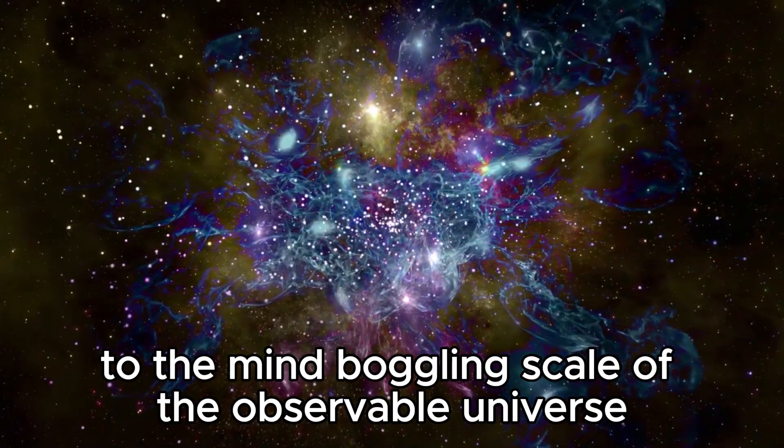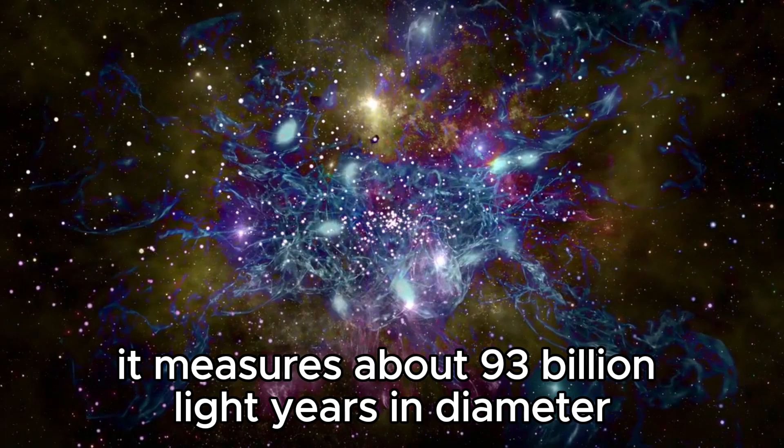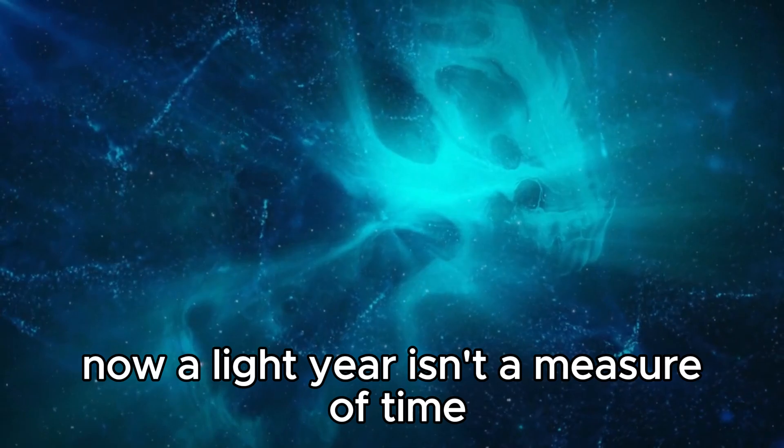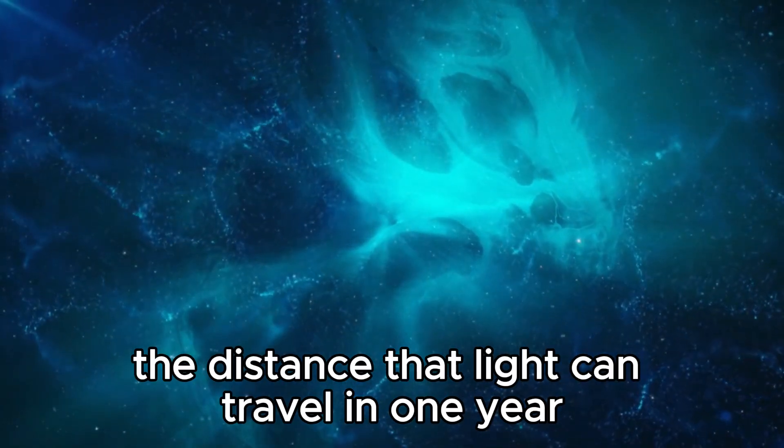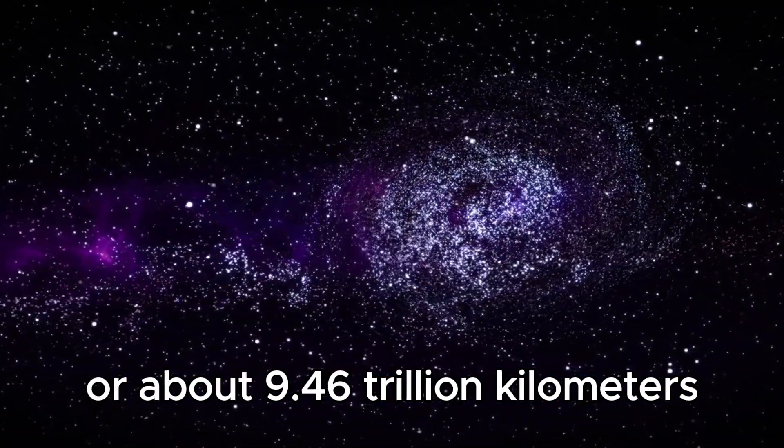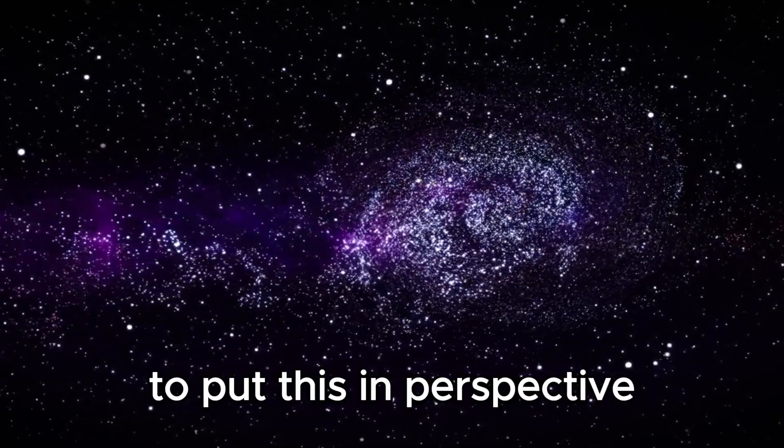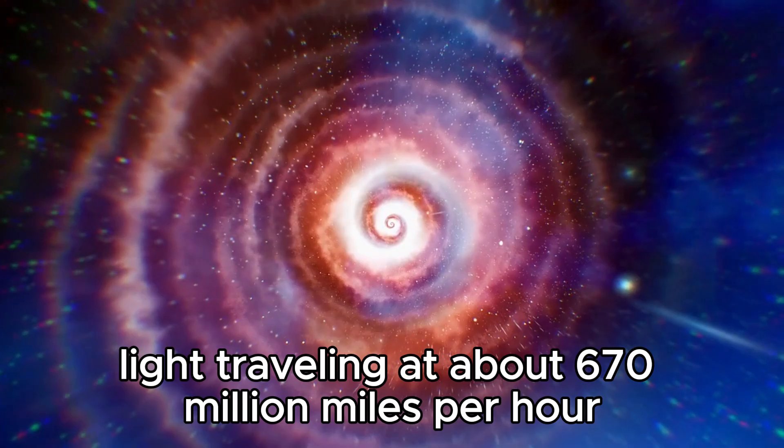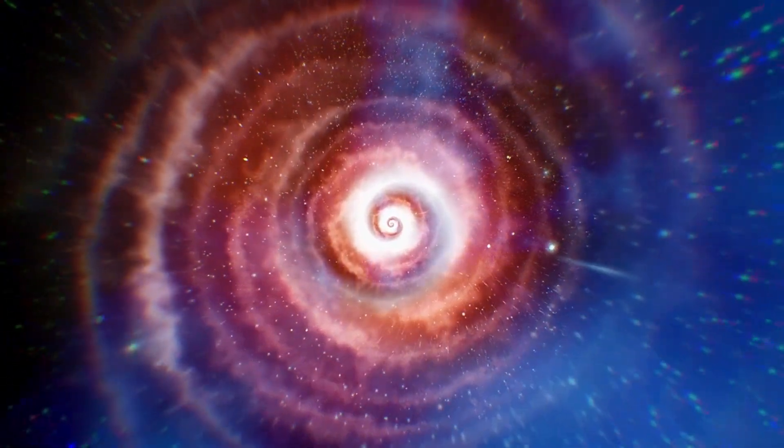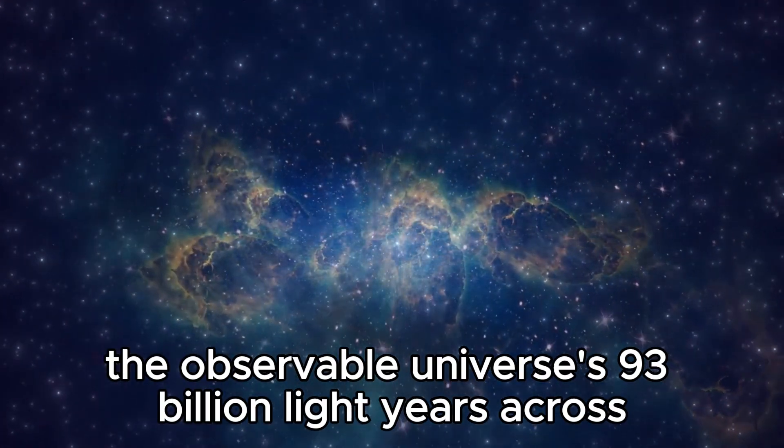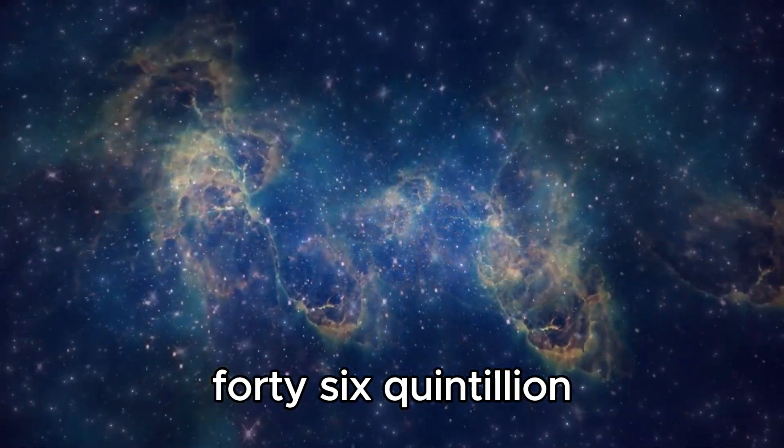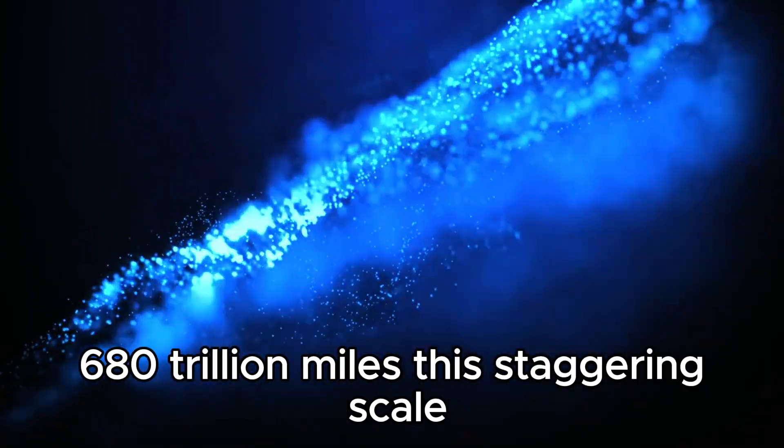This brings us to the mind-boggling scale of the observable universe. It measures about 93 billion light years in diameter. Now, a light year isn't a measure of time but of distance. It represents the distance that light can travel in one year, which is approximately 5.88 trillion miles or about 9.46 trillion kilometers. To put this in perspective, imagine light traveling at about 670 million miles per hour, roughly the speed of light, and covering that enormous distance in a year. So when we say the observable universe is 93 billion light years across, we're saying that it spans a distance of about 546 quintillion, 845 quadrillion, 680 trillion miles.